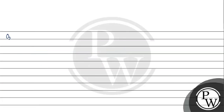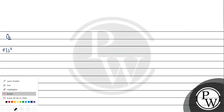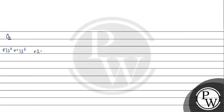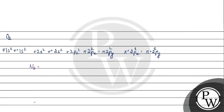Now let's look at O2. Electronic configuration: sigma 1s2, sigma star 1s2, sigma 2s2, sigma star 2s2, sigma 2pz2, pi 2px2 equals pi 2py2. We have the anti-bonding pi star orbital. Sigma star 2pz goes to pi star 2py. Total we have 16 electrons. Number of bonding electrons: 2, 4, 6, 8, 10. Bonding electrons are 10.